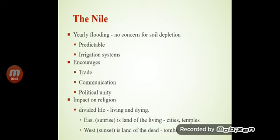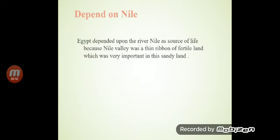Early flooding was no concern for soil. Predictable irrigation systems encouraged trade, communication, and political unity. Religion divided life into living and dying states: east, where the sun rises, is the land of the living — cities and temples; west, where the sun sets, is the land of the dead — tombs. Egyptian civilization depended on the river as a source of life, because the Nile valley was a thin ribbon of fertile land, which was very important in this desert land.